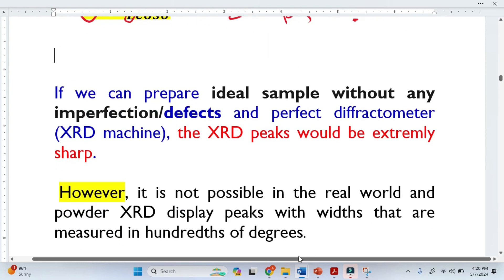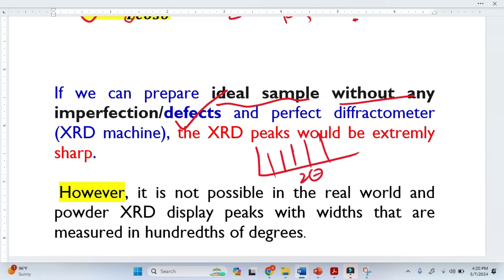Now, in the real world, it is not possible. But if we can prepare an ideal sample without any imperfection or defects, and if we have a perfect XRD machine, we will get completely sharp peaks like this. This is the 2θ, and this is the intensity. But in a real scenario, it is not possible.